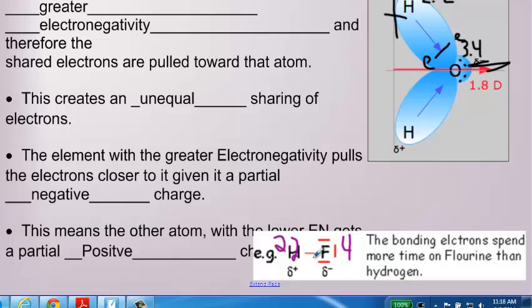The electrons shift towards fluorine, which gives fluorine the partial negative charge, and hydrogen the partial positive charge. So you generate a positive pole and negative pole in your molecule, which is why it's called polar. That's sort of an appropriate term.